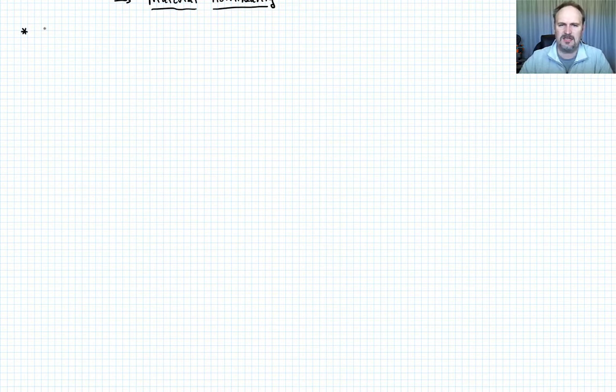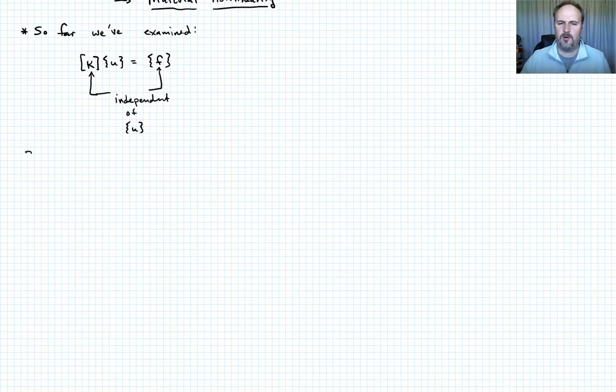So what have we done so far in this class? So far, we've looked at the following. We've looked at the equation that had the form K times U is equal to F. And in what we've looked at thus far, how we would apply the boundary conditions here would be independent of U and so would K. So in what we have done thus far, both K and how we apply the boundary conditions here on F, both of those cases would be independent of U.